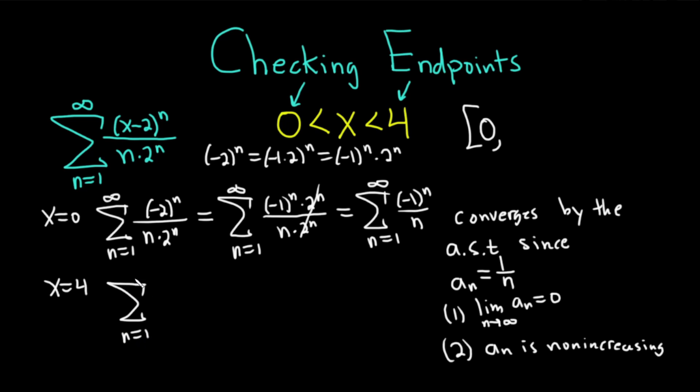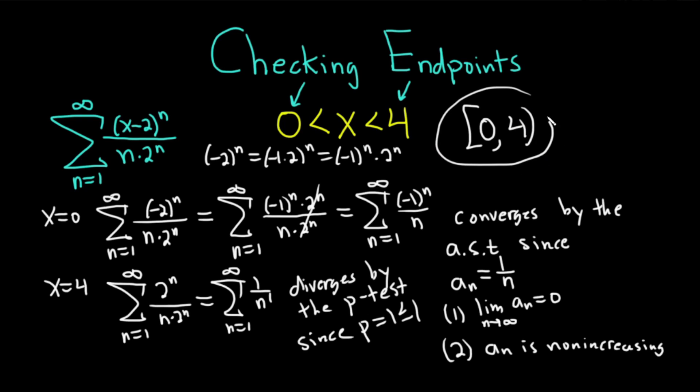We're plugging in 4 for the x. So n goes from 1 to infinity. 4 minus 2 is 2, so we get 2 to the n over n times 2 to the n. This equals the infinite sum as n runs from 1 to infinity of 1 over n. And this diverges by the p-test, where it's a divergent p-series since p, which is the exponent on the n, is 1, which is less than or equal to 1. So we don't include the 4, so we put a parenthesis.